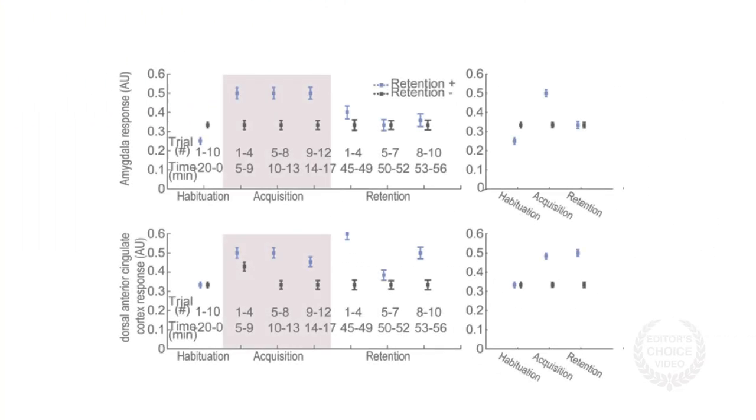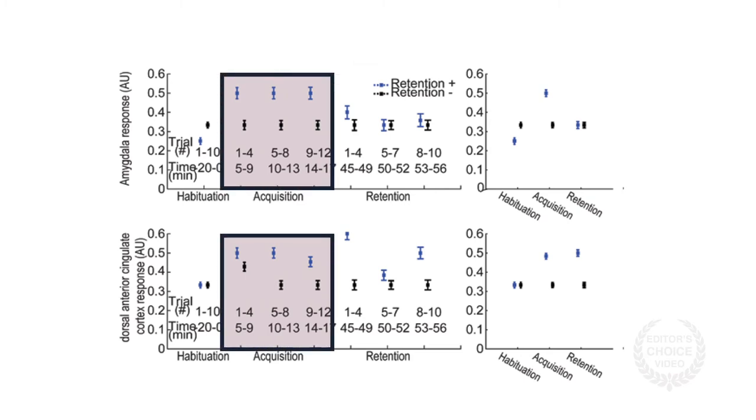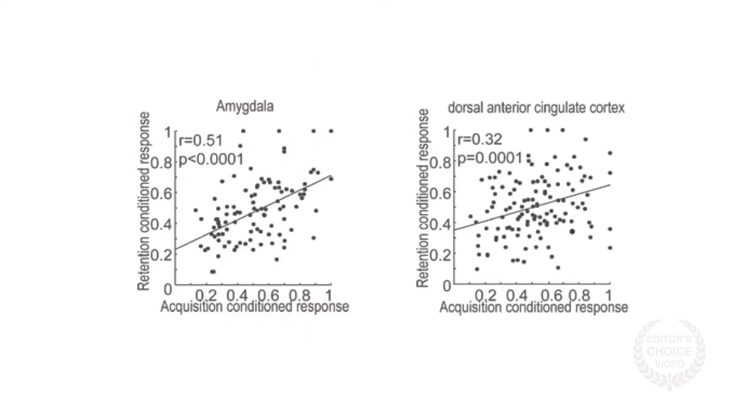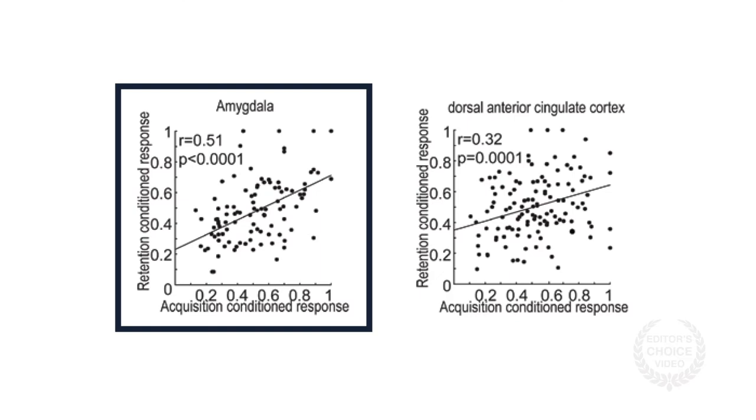The single-neuron responses also showed similar patterns. During acquisition, the neuron response in the amygdala and dorsal anterior cingulate cortex were stronger during sessions with evidence of memory formation. The responses were also correlated between acquisition and retention, with the change in the firing rate of neurons in the amygdala during acquisition predicting memory retention.